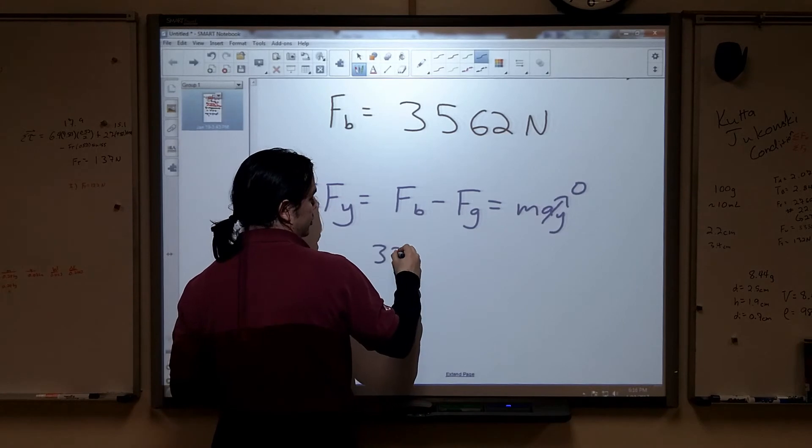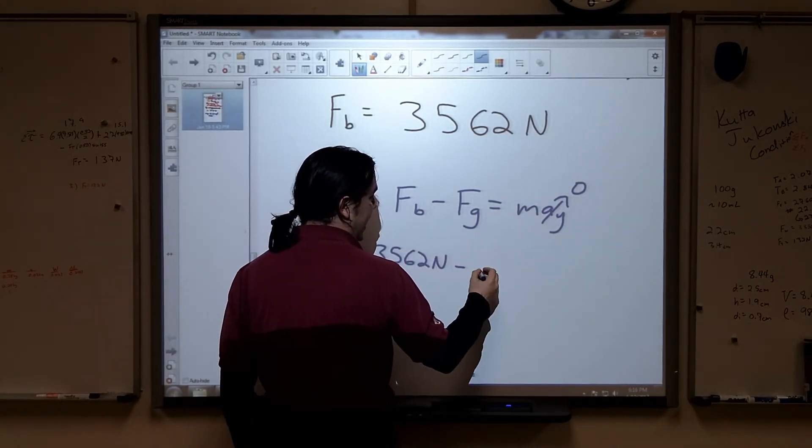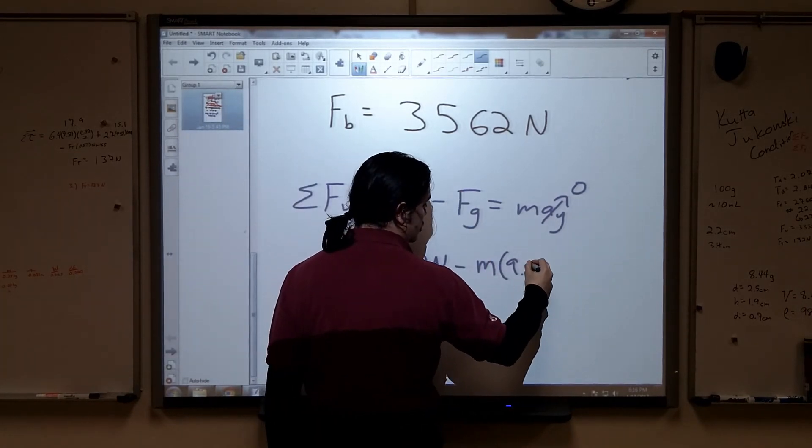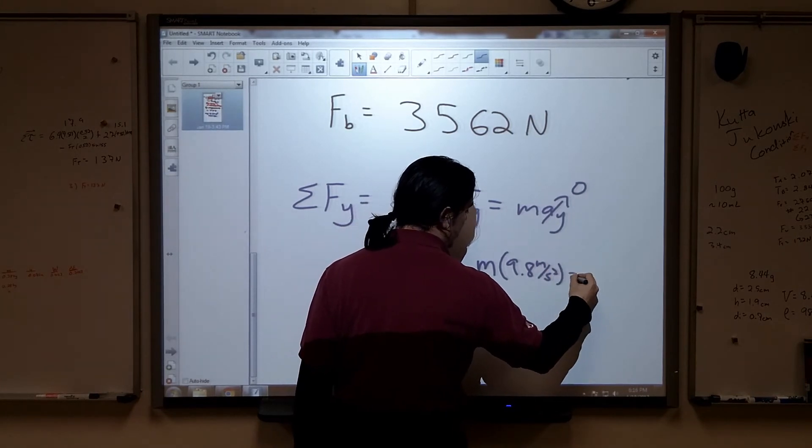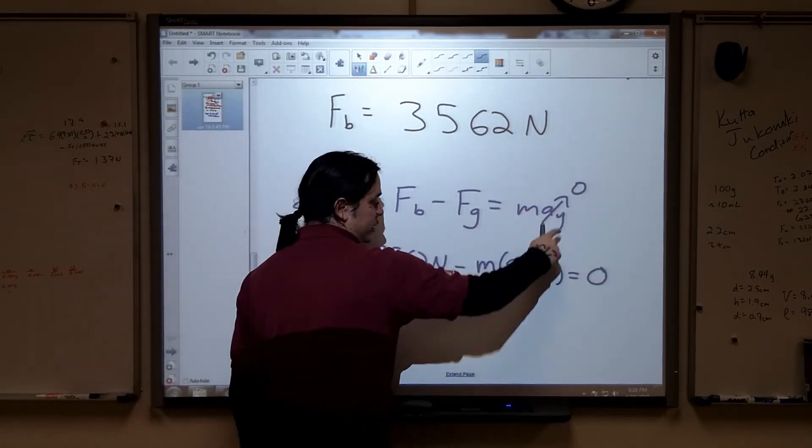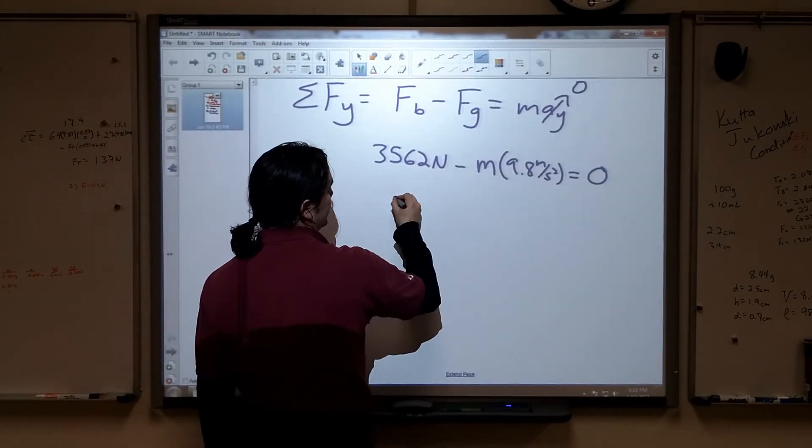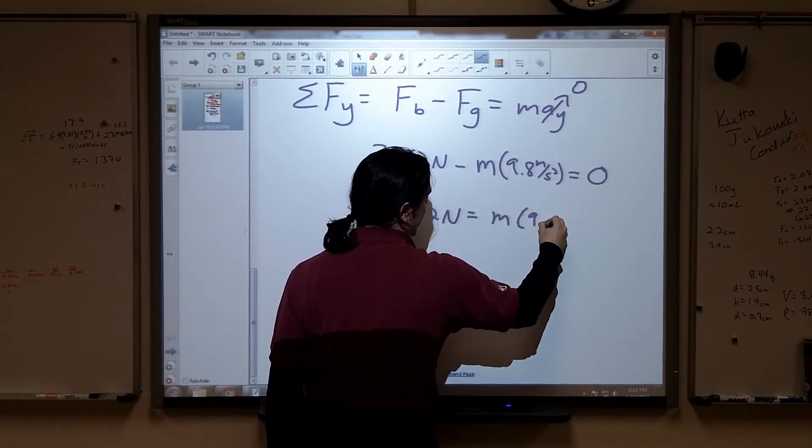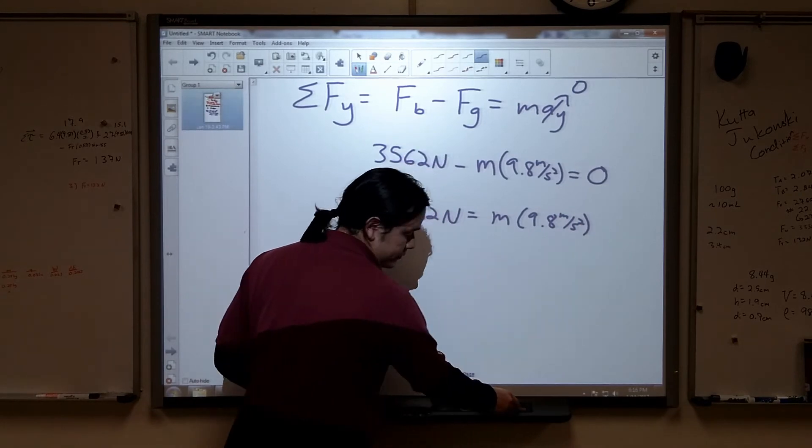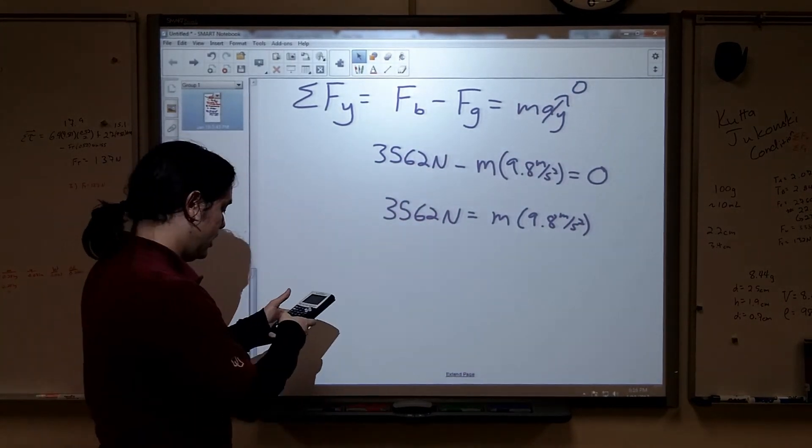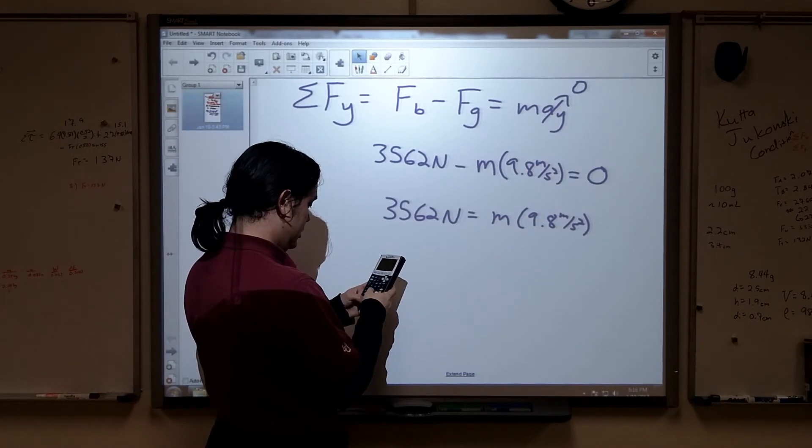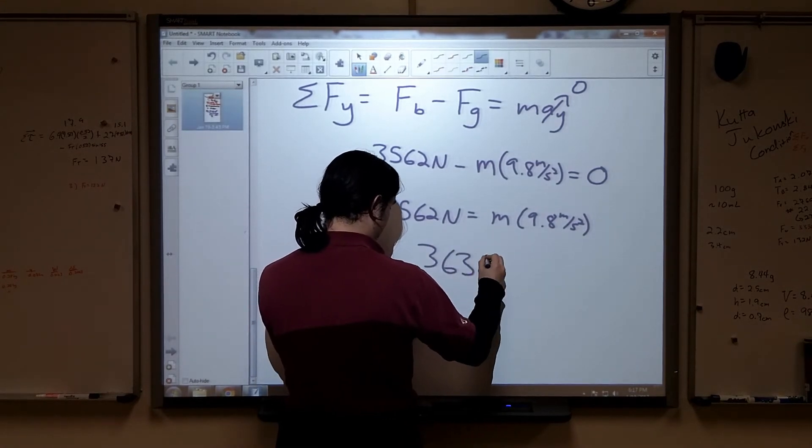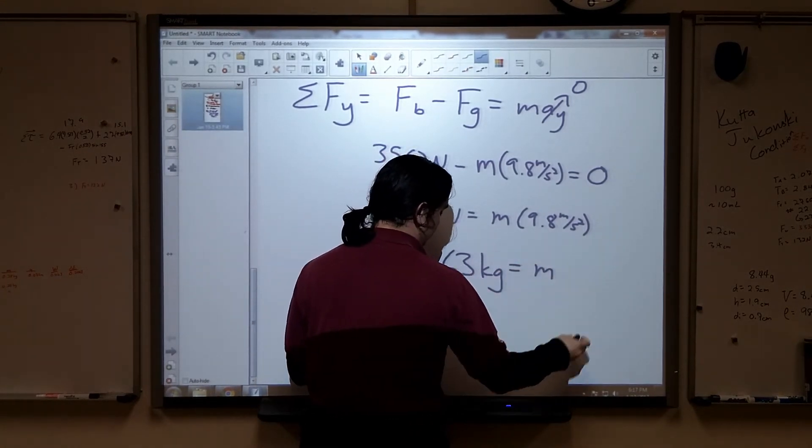So we found the buoyant force here, which is 3562 newtons, minus the force of gravity, which is the mass of the object times the acceleration due to gravity, 9.8 meters per second squared, equals zero because I have no acceleration over here. Add this over to the other side, I get 3562 newtons equals m times 9.8 meters per second squared. I divide both sides by 9.8, so I'm going to take this divided by 9.8. I should get something in the ballpark of 363 kilograms equals my mass.